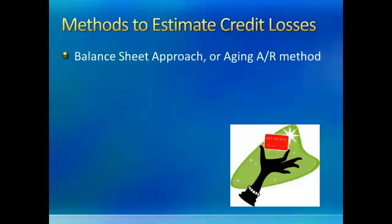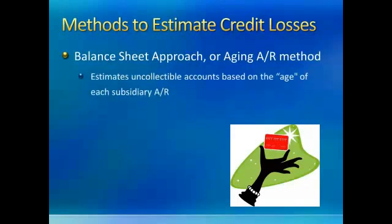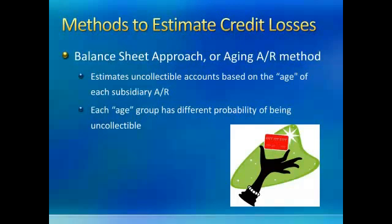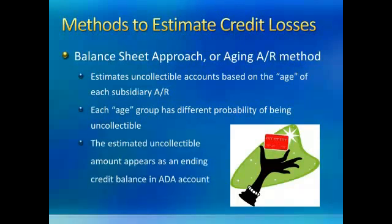The methods to estimate the uncollectable expense include the Balance Sheet Approach, sometimes referred to as the Aging or Accounts Receivable method. This method estimates uncollectable accounts based on the age of each of the accounts receivable. Each age group has a different probability of being uncollectable. The estimated uncollectable amount appears as an ending credit balance in the Allowance for Doubtful Accounts. We look at all of our accounts receivable, determine the percentage that will be uncollectable, and that will be our balance in the Allowance for Doubtful Accounts.